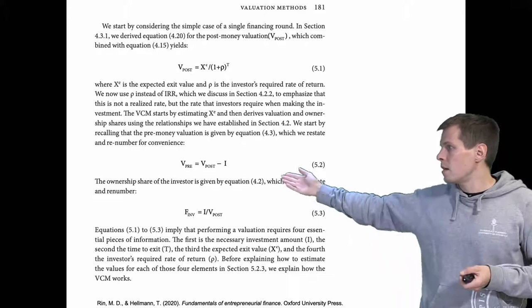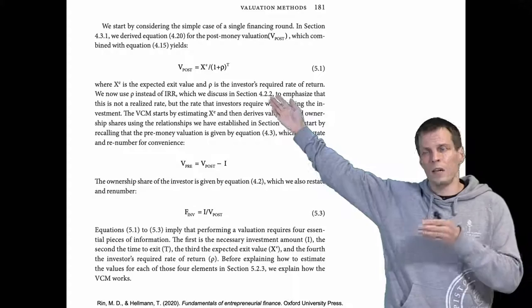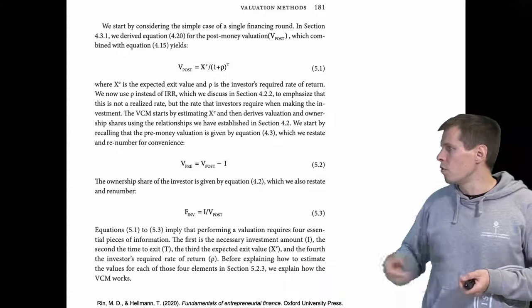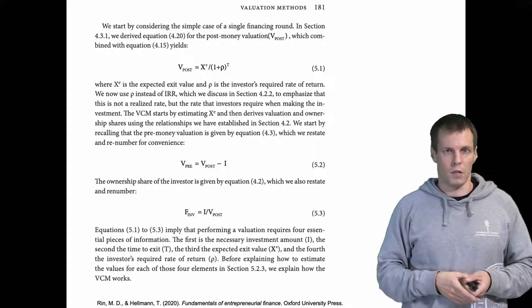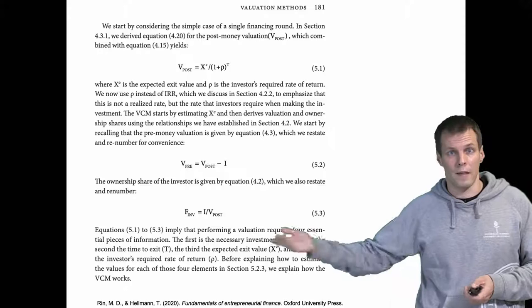The pre-money valuation is the post-money valuation — calculated by discounting the exit value — minus the investment. If you want to know how much share you will get, you divide the investment by the post-money valuation. That is where figures like 10% ownership come from: pre-money valuation, post-money valuation, and the amount of investment.